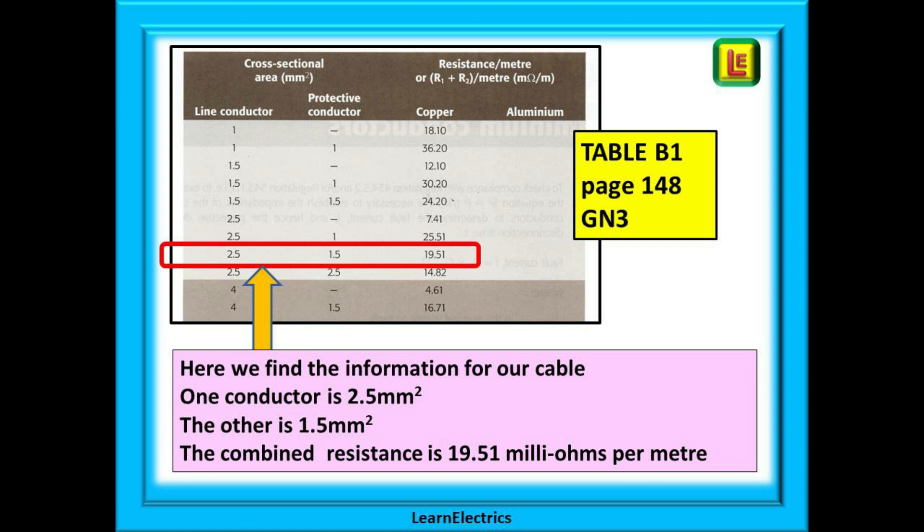Follow the first column down until you find the 2.5 mm section the CSA of our brown conductor. Now look in the second column and find 1.5 mm the CSA of the earth conductor. The third column will tell us the combined resistance for these two conductors as shown in the red box. It is given here as 19.51 milli ohms per meter.